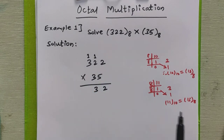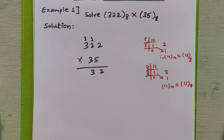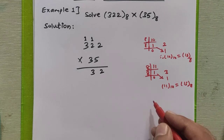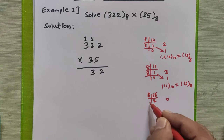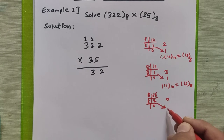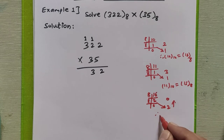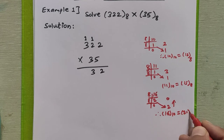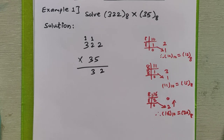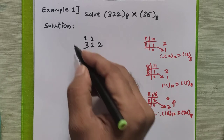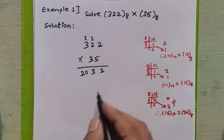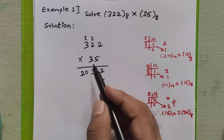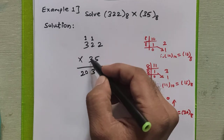When you convert 16 decimal to octal, you divide 16 by 8: quotient 2, remainder 0; then quotient becomes 0, remainder 2. So 16 decimal equals 20 in octal. We write 20 here as-is because there are no further digits. So multiplying all digits by 5 gives us 2032. Now for the next digit, we multiply 3 by 2: 3×2 is 6.